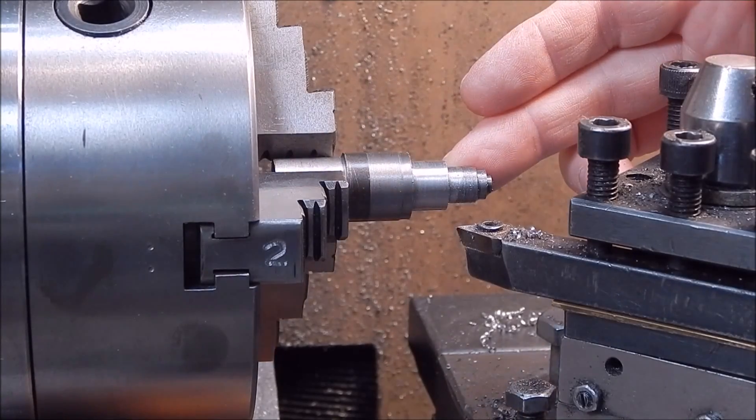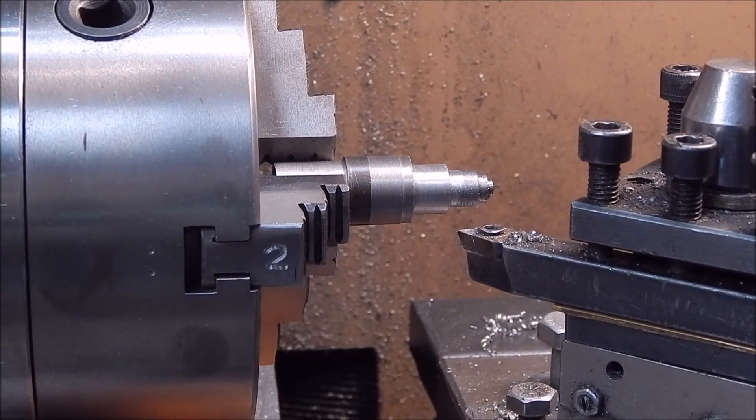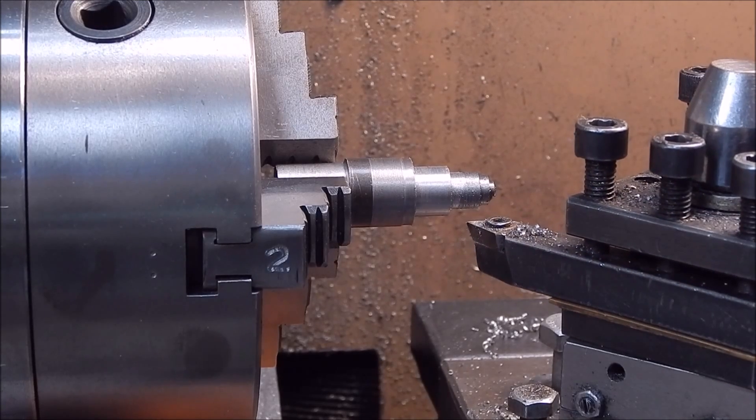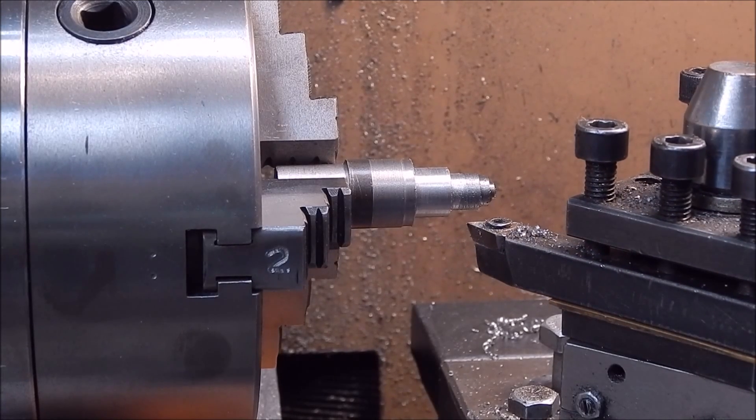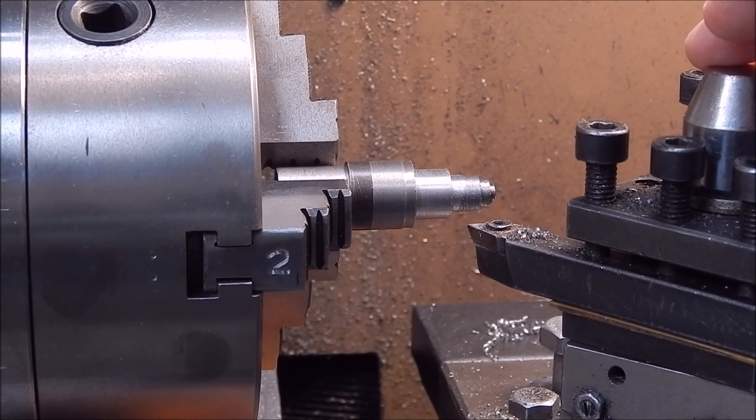So here's a bit of rubbish that I've machined. My index finger, you can see how big it is. It's a standard TCMT cutter, small carbide indexable cutter. Now we'll just move on and have a look at the rig.